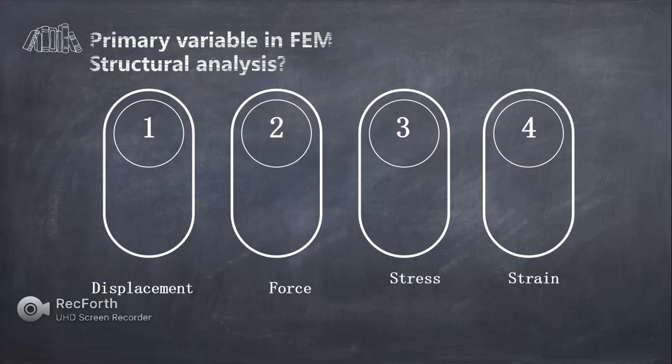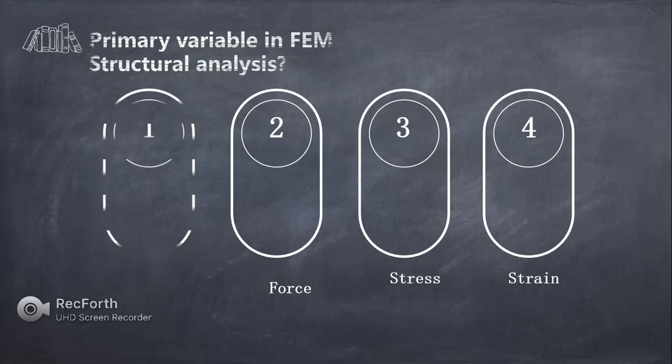The third question is: what are the primary variables in FEM structural analysis? A structural analysis gives deformation at each node. The options are displacement, force, or stress. In any structural analysis, the main primary variable is displacement, so the first option is the right answer.